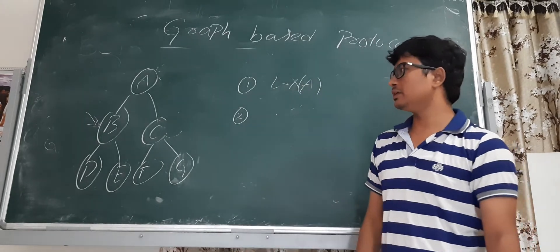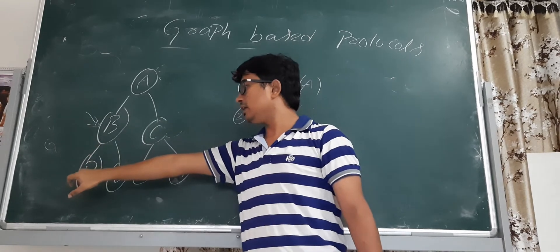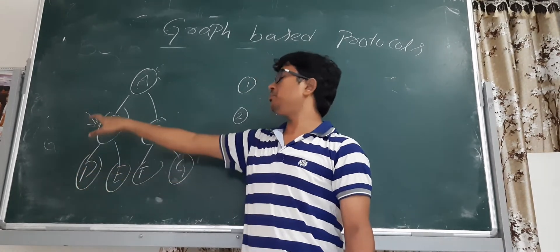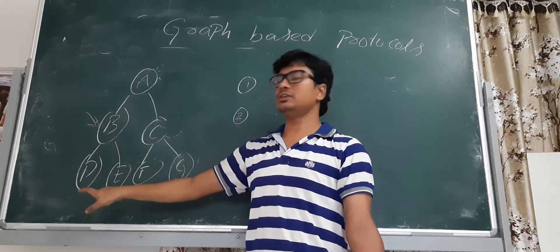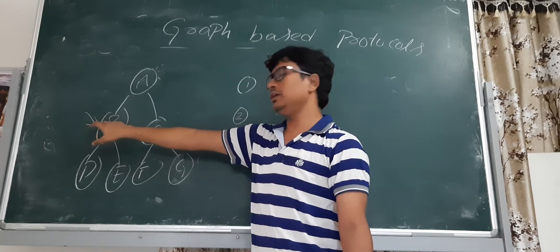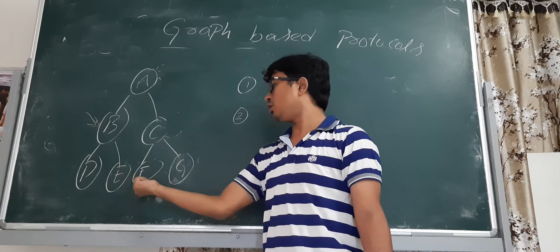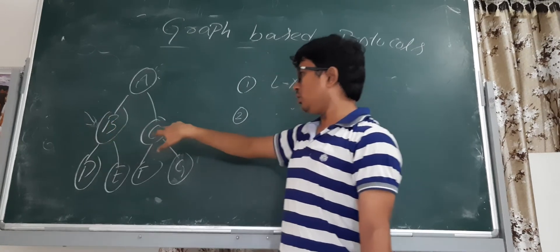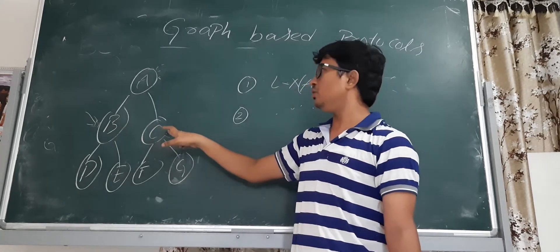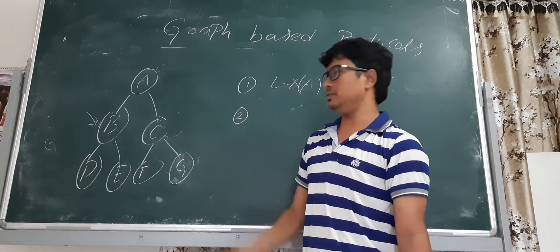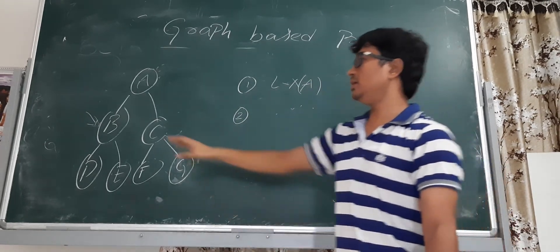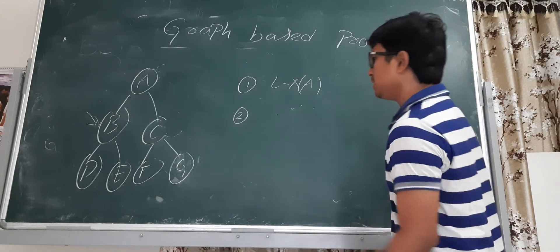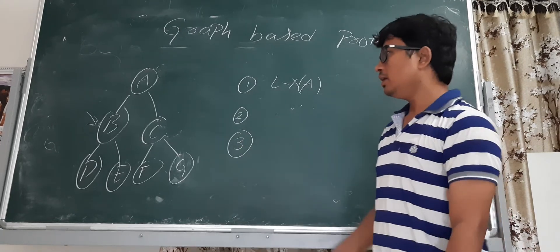The third important point: once you have locked B, you can only lock D and E — not F and G. The rule is: if you want to lock any data item, its parent must be locked first. If the parent is locked, then only the subsequent children can be locked. Since you locked B, you can lock D and E, but you cannot lock F and G because you did not lock C. Similarly, if you want to lock C, you must first lock its parent A before locking C.